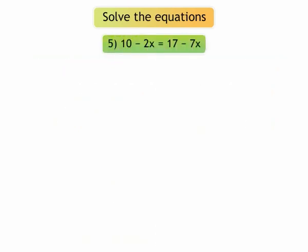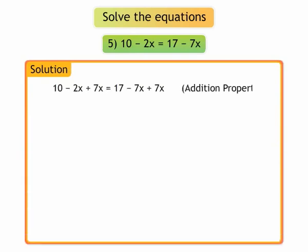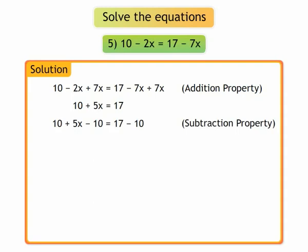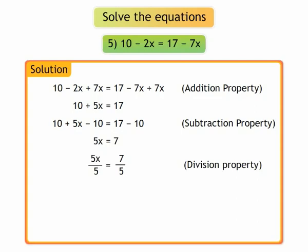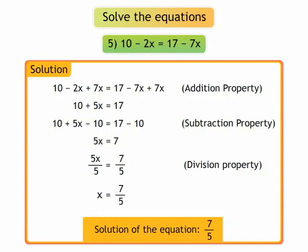5. 10 minus 2x is equal to 17 minus 7x. By using addition property, we get 10 plus 5x is equal to 17. By using subtraction property, we get 10 plus 5x minus 10 is equal to 17 minus 10. By using division property, we get 5x upon 5 is equal to 7 upon 5. We get x is equal to 7 upon 5. The solution to the equation is 7 upon 5.